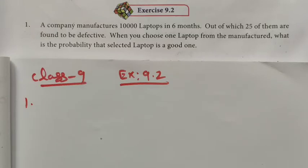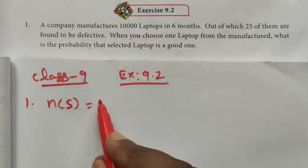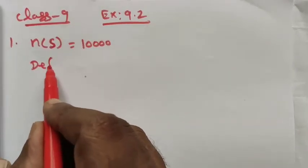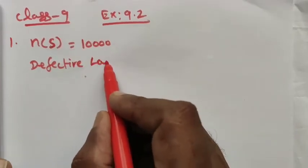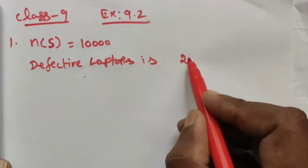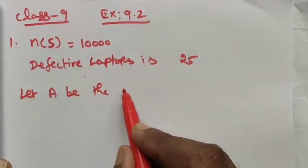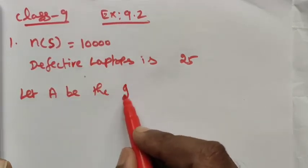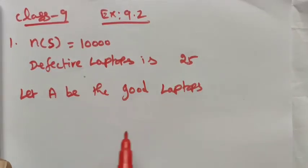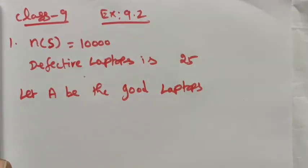So here, n(S), the total number of sample space, is 10,000 laptops. Defective laptops is 25. Let A be the good laptops. If you want to find what is the good laptop, we have to subtract the defective number from the total number of laptops.